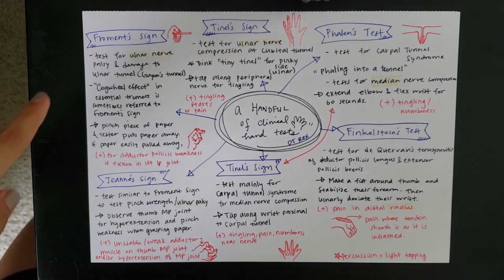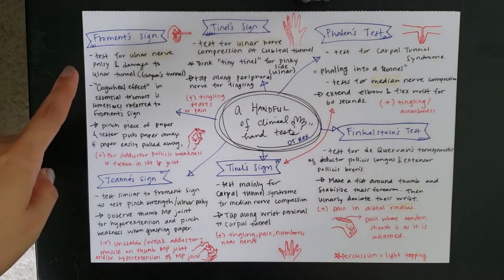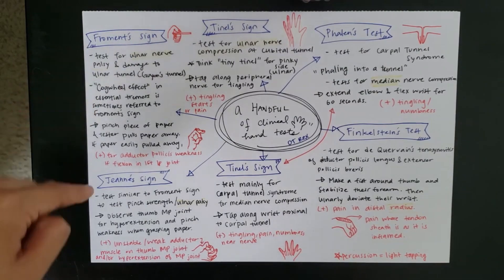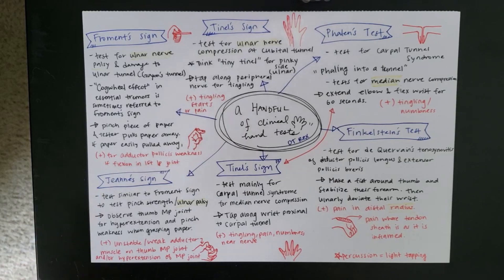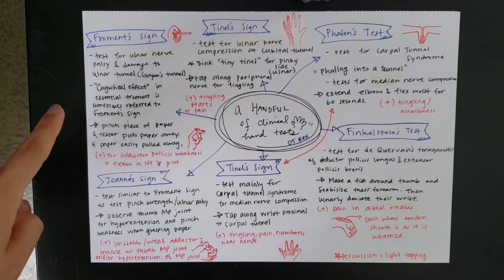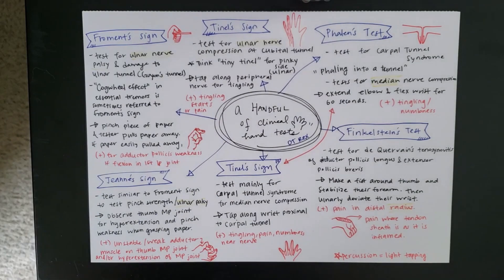Moving on to Froment's. I don't know if it's Froment's or Froment's. Froment's and Jeanne sign are very similar. So, starting off with Froment's. This is a test for the ulnar nerve palsy and any damage to the ulnar tunnel, which is also called the Guyon or Guyon's tunnel. This one is also related to the cogwheel effect. And that's in essential tremors. So, sometimes they will refer to it as the Froment's sign. Just FYI.